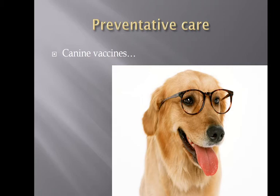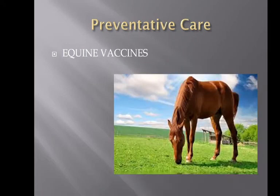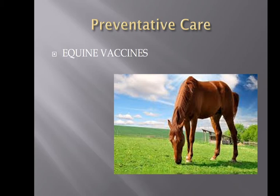Some canine vaccines: distemper, distemper-parvo-lepto, coronavirus — a GI virus usually given only to puppies — rabies, Lyme vaccine, and Bordetella. Some equine vaccines: rabies, tetanus, equine flu, rhinopneumonitis, encephalitis vaccines including eastern, western, West Nile, and Venezuelan, Potomac horse fever, and depending on the area, a polyvalent vaccine containing flu and various encephalitis diseases, plus possibly extra botulism.